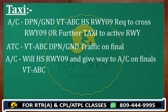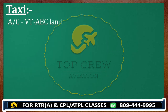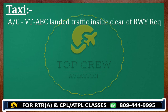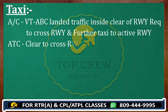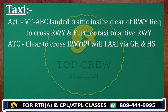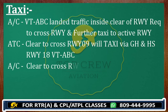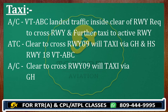Once you see the traffic has landed, call again: Delhi Ground, Victor Tango Alpha Bravo Charlie, landed traffic clear of runway, request to cross runway and further taxi to active runway. ATC responds: Victor Tango Alpha Bravo Charlie, cleared to cross Runway 09er and taxi via Golf Hotel, hold short Runway 18. You read back: cleared to cross Runway 09er, taxi via Golf Hotel, hold short Runway 18, Victor Tango Alpha Bravo Charlie.